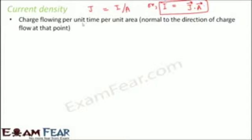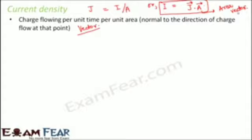Since current density is a vector quantity, it has magnitude and direction. The direction of current density equals the direction of current flow. This raises the concept of the area vector, since we normally know that area is a scalar quantity. To understand the area vector, let's consider an example.